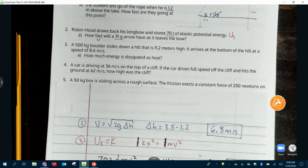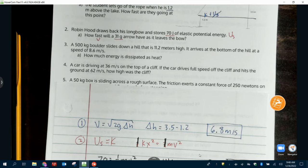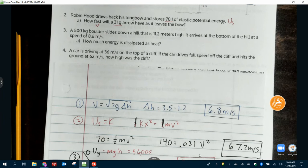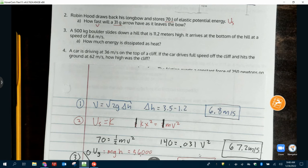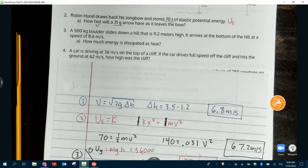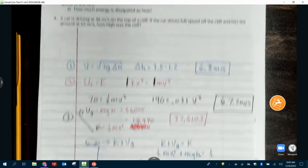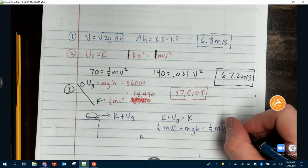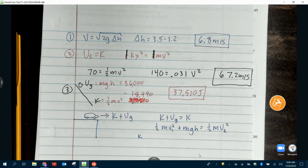Number four. Car's driving at 36 meters per second on top of a cliff. If the car drives full speed off the cliff and hits the ground at 62 meters per second, how high was the cliff? We've got a cliff. We've got a car. I don't recommend this. What type of energy do we have at the top? Potential and kinetic. Because it's moving, and it's off the ground. When it lands, it's going to have just kinetic, because now there's no height. So you're going to say K plus UG equals K. One half MV1 squared plus MGH equals one half MV2 squared.